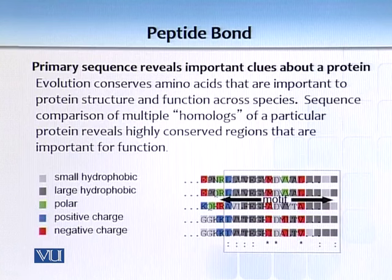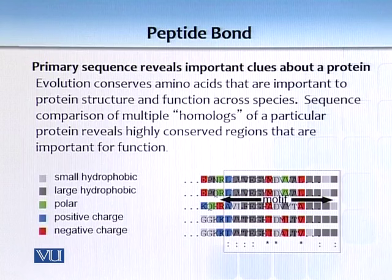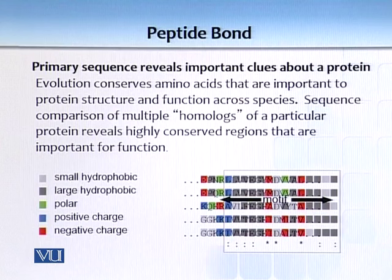There are certain interesting things about primary sequence — that is, the amino acid sequence. Don't underestimate it; it reveals a lot, including information about evolution. Evolution conserves amino acids that are important to a protein's functionality, and functionality depends upon structure. In this image, you can see homologues of a particular protein from various species, showing that regions are conserved across species.